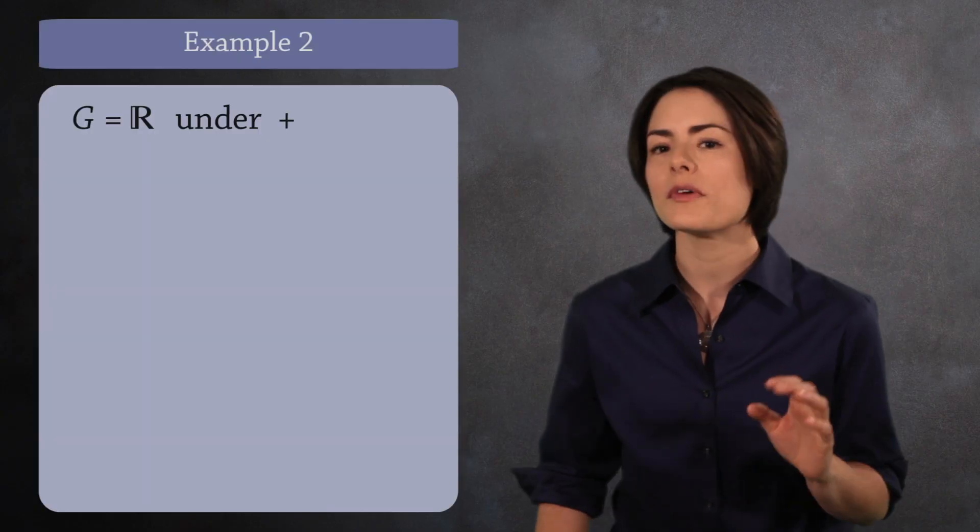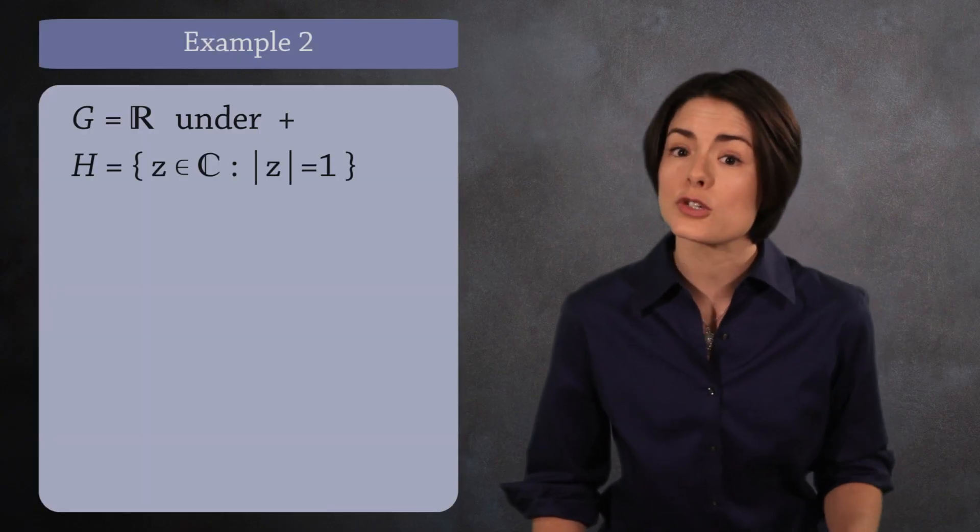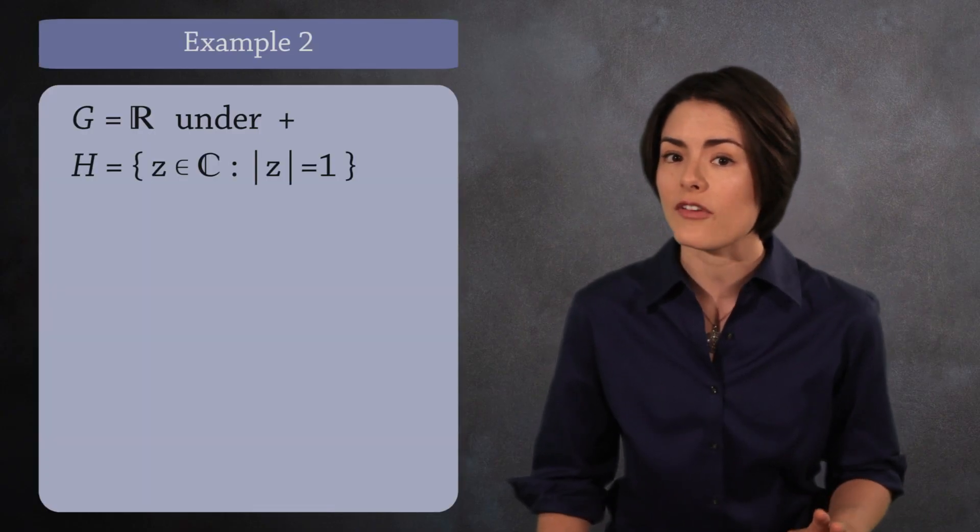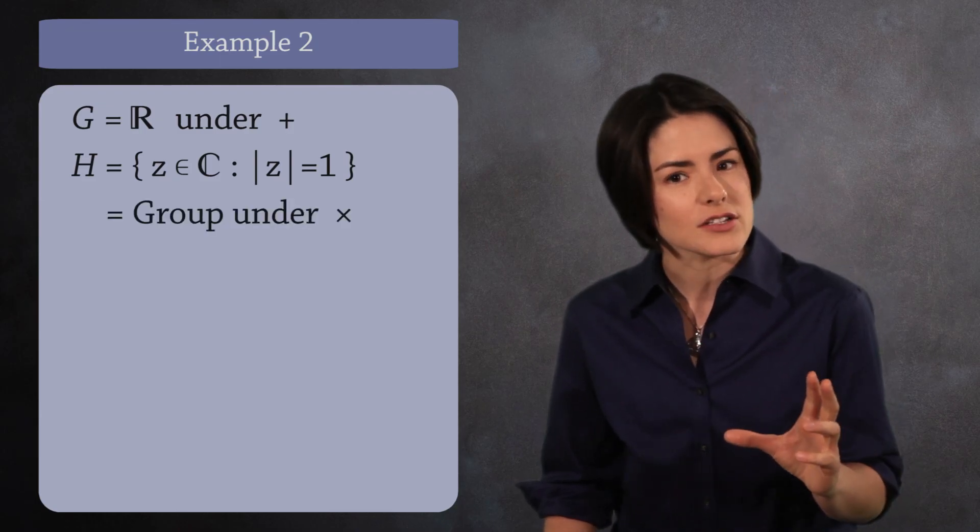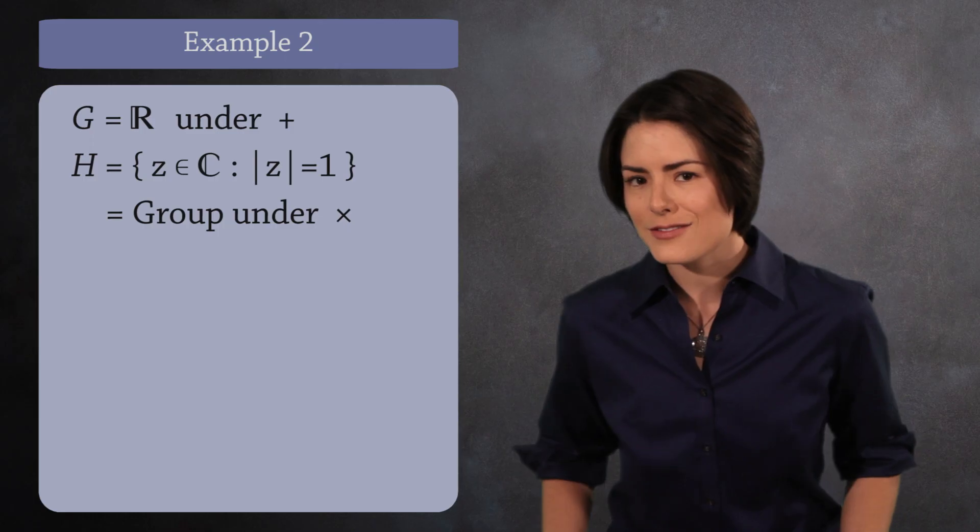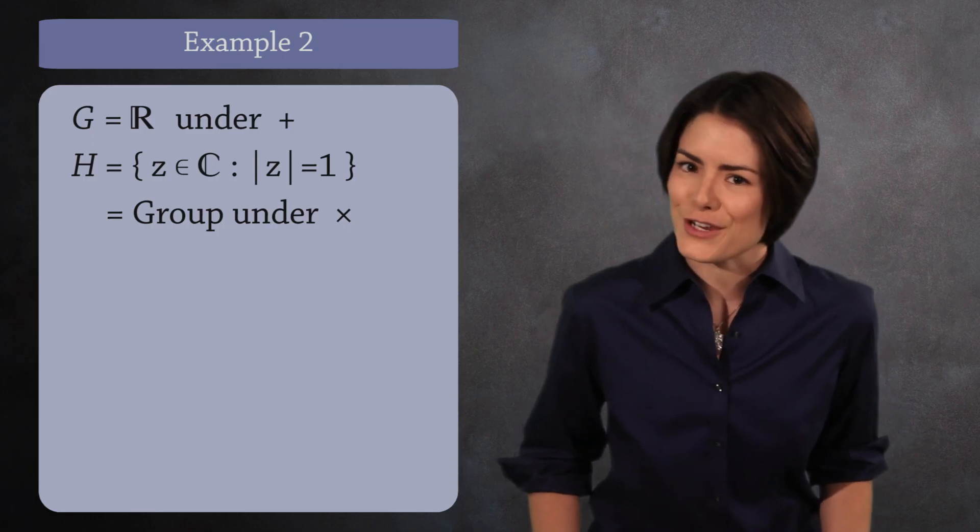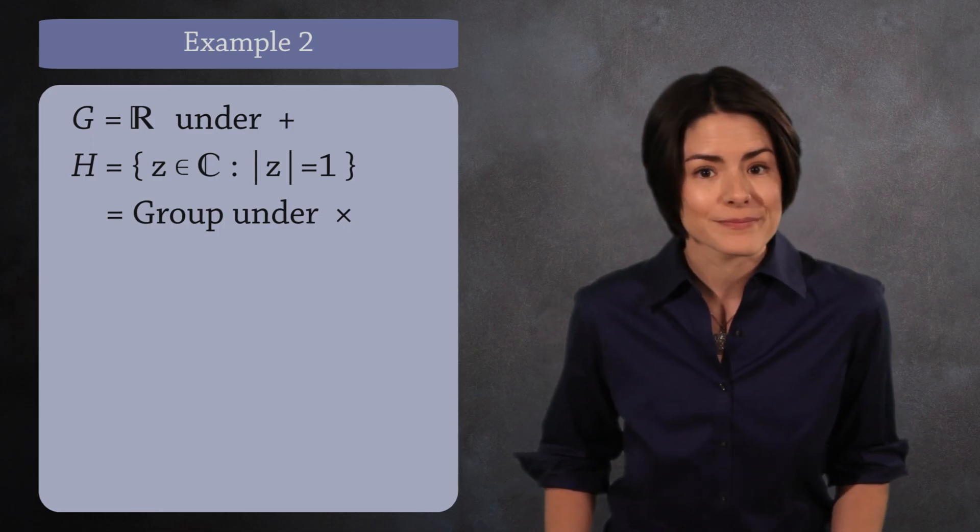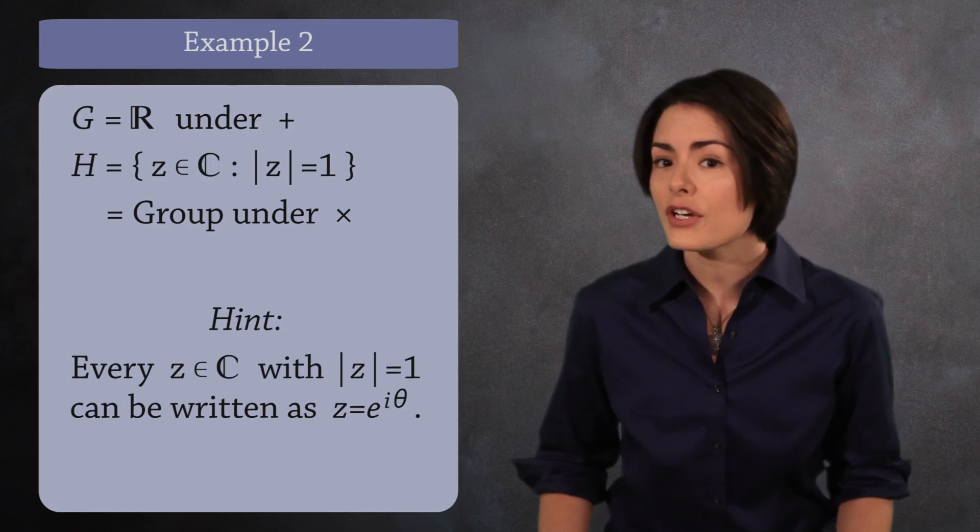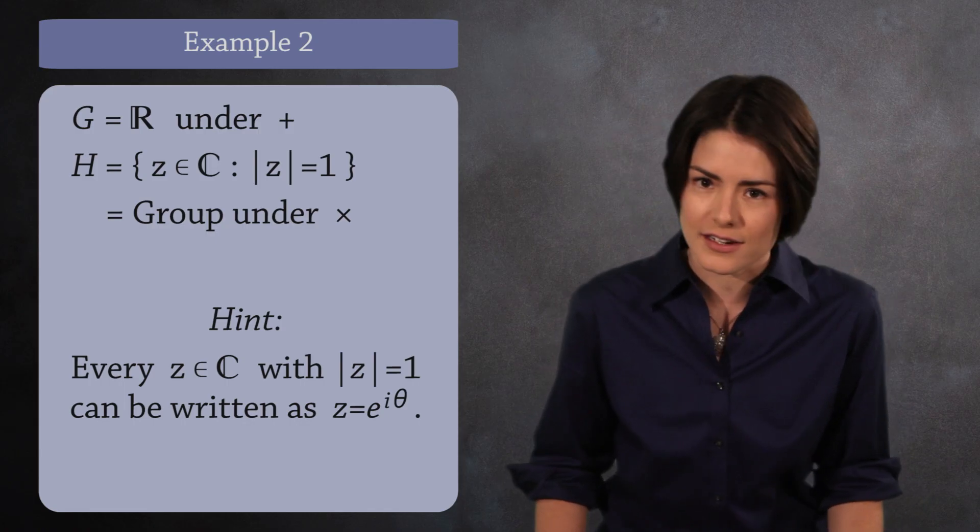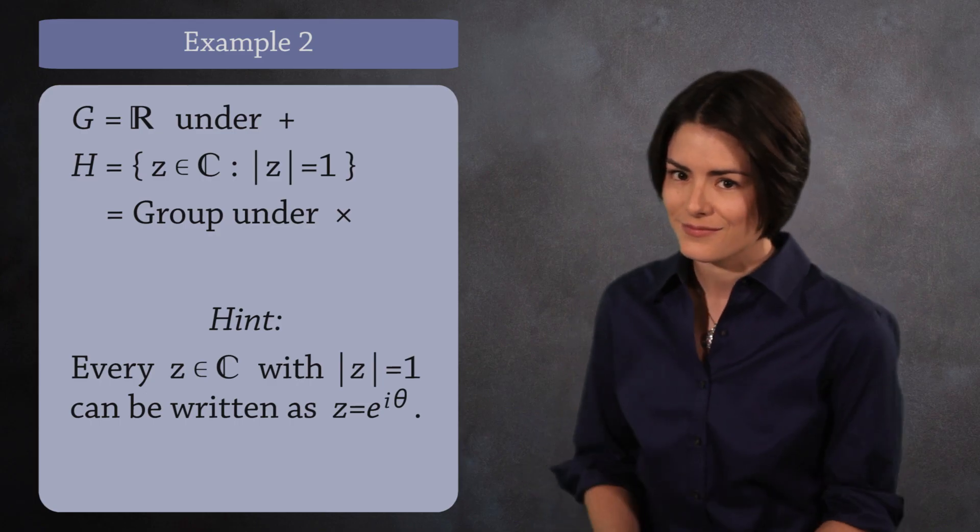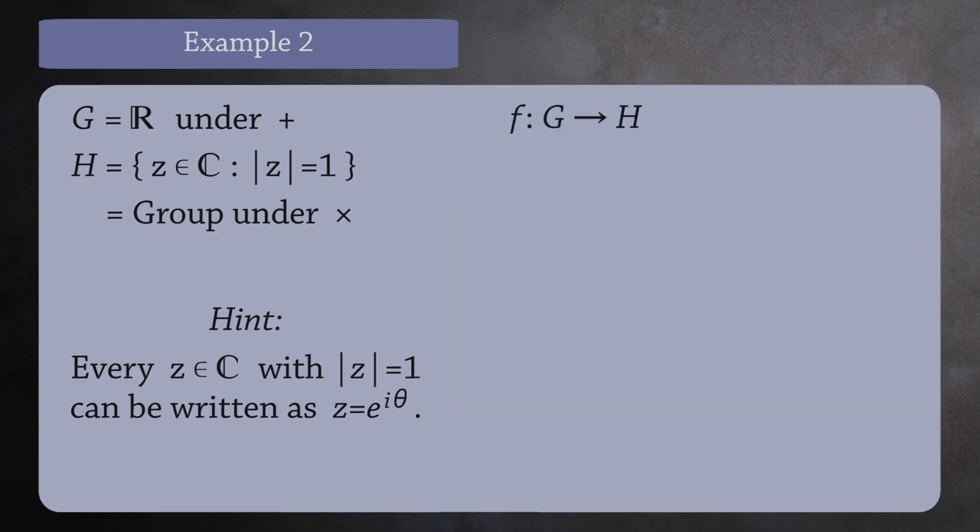Here's another example of a homomorphism. G will be the real numbers under addition, and H will be the complex numbers with absolute value 1. These complex numbers form a group under multiplication. Showing this is a good exercise, so why don't you pause the video and show that H is a group? Here's a hint. Every complex number with absolute value 1 can be written as e to the i theta for some angle theta. Define the function f as f of x equals e to the i x.